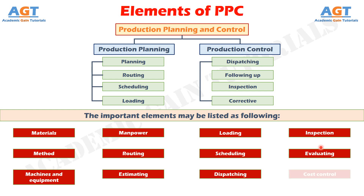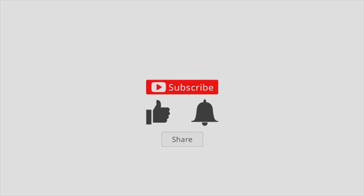And finally, Element No. 12: Cost Control. Manufacturing cost is controlled by wastage reduction, value analysis, inventory control and efficient utilization of all resources.